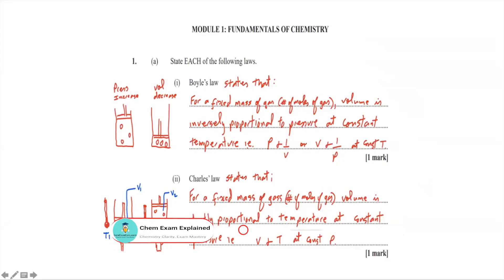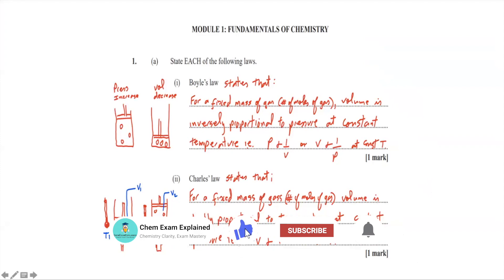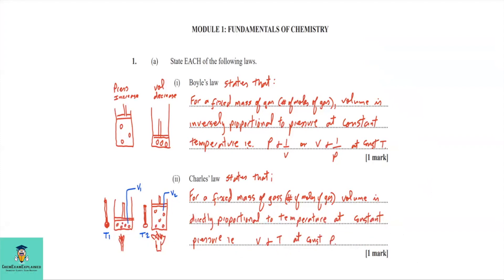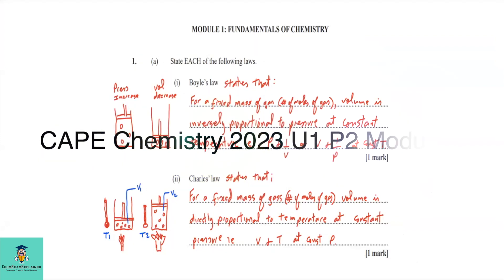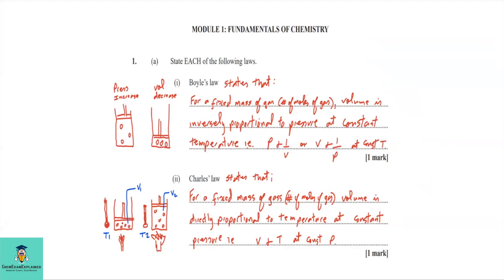Welcome to this channel, Chem Exam Explained, where we will go through various past paper questions and I'll do my best to explain as best as possible. For this video, we are doing CAPE Chemistry Unit 1, Paper 2. We're starting with Module 1, Fundamentals of Chemistry, and the first question, 1A, Part 1 and Part 2, is asking us to state each of the following laws.